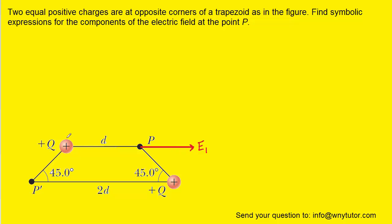That's the electric field produced by this positive charge. But of course there's another positive charge. Over here at point P, we would expect the electric field line to once again be pointing away from that positive charge. So if we draw a line at point P pointing away from that charge, it would be pointing in this direction. We can label that electric field line E2.